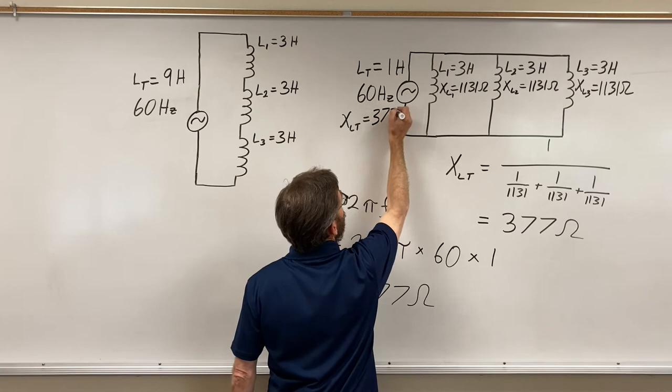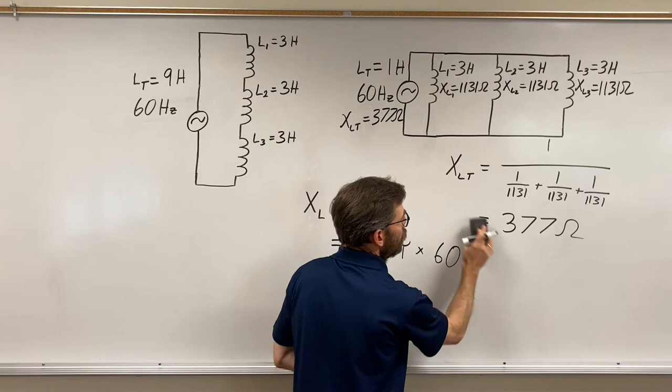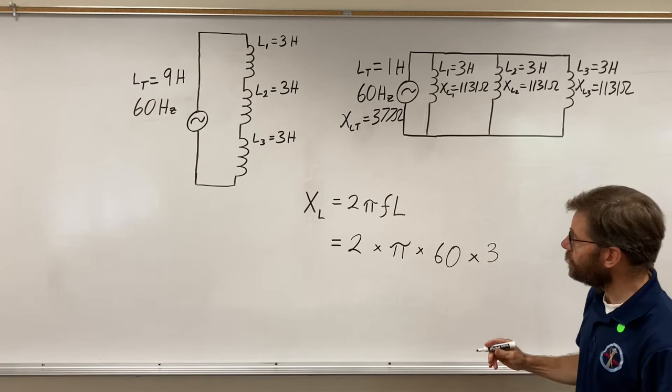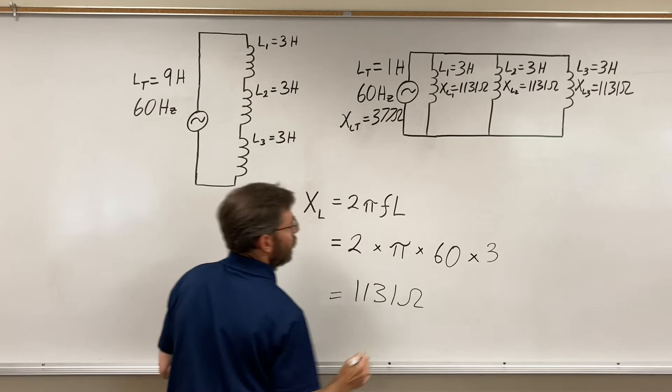Let's consider now the series circuit. Again that's times three because there are three Henry's each which we found out was 1131 ohms. Each of these is 1131 ohms.